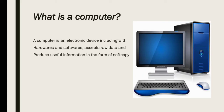First of all, we have to understand what a computer is. A computer is an electronic device including hardware and software. It accepts raw data and produces useful information in the form of soft copy and hard copy. Computer has become very important nowadays because it is very accurate, fast, and can accomplish many tasks easily. It can do very high calculations in just a fraction of a second. Moreover, it can store a huge amount of data.